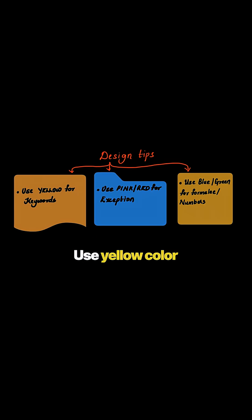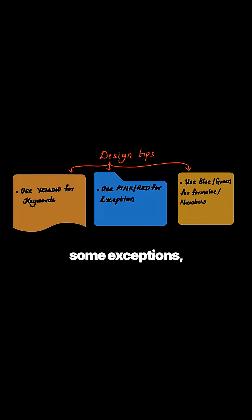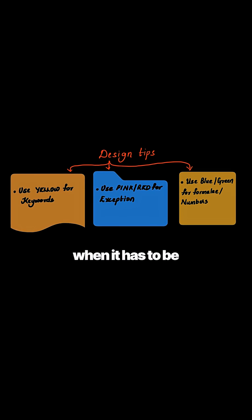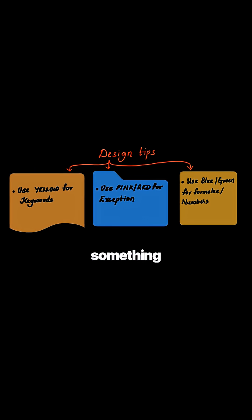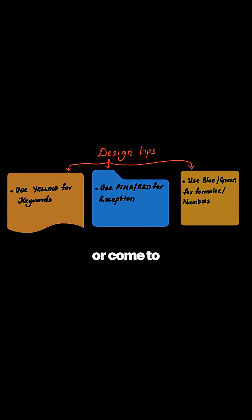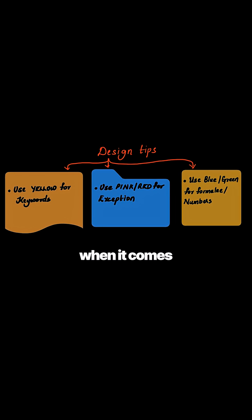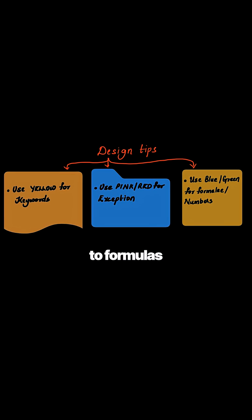Some design tips as well: use yellow colour when writing exceptions, use red colour for things that need to be highlighted or brought to your notice, and use blue or green for formulas and numbers. This way you can make one-page notes — and students, this is very important for your NEET.